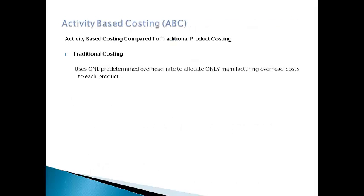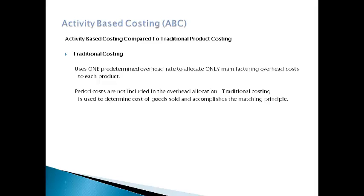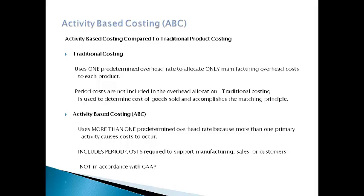Traditional costing occurs when the company groups only manufacturing overhead cost into one total cost pool and allocates cost to products using only one activity. Period costs are not included in the traditional cost of a product. This method does not include all costs incurred to support the product when determining the profitability of each product. Activity-based costing includes all costs incurred to make and support the product, both product and period, to determine the profitability of each product. Many different activities are incurred to cause costs and more than one overhead rate is used. Including period costs in the cost of the product is not in accordance with GAAP; however, it is much more useful for internal decision making.